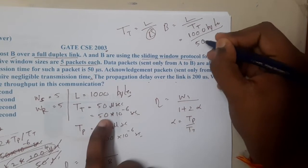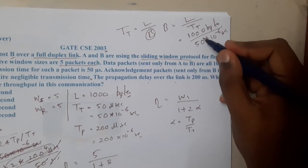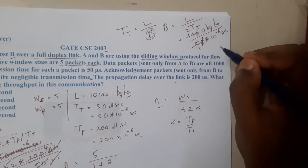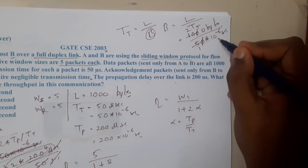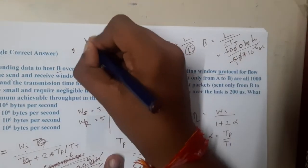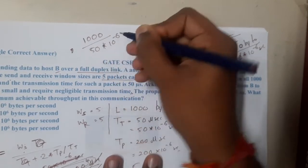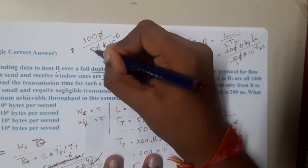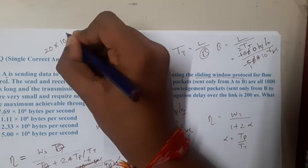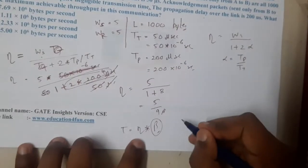Bandwidth = 1000 bytes / (50×10⁻⁶ seconds) = 1000/50 × 10⁶ = 20×10⁶ bytes per second. So the bandwidth is 20×10⁶ bytes/s.